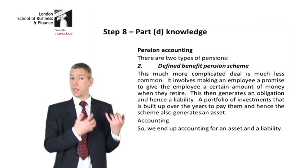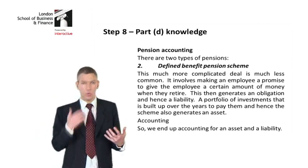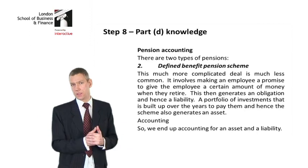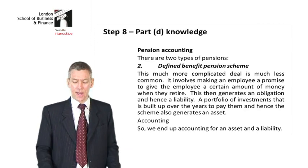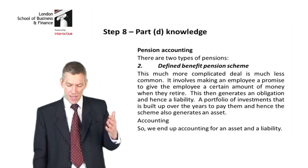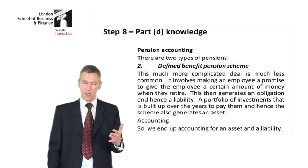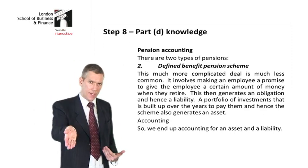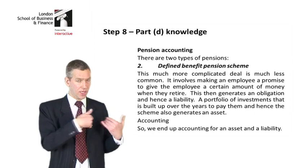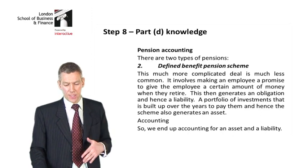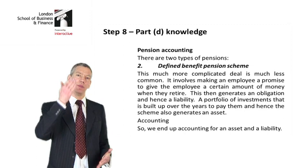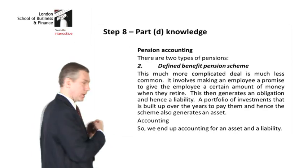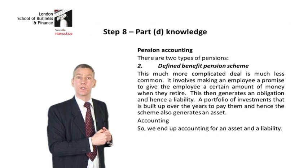Most people associate pensions accounting with defined benefit pension schemes, because that's the more difficult one. This more complicated arrangement is much less common, but it's the one that gets examined. It involves making an employee a promise to give them a certain amount of money when they retire. This generates an obligation — hence the liability. I promise to give you a certain amount when you retire, and that gives rise to my obligation and liability. A portfolio of investments is built up over the years to pay them, and hence the scheme also generates an asset.